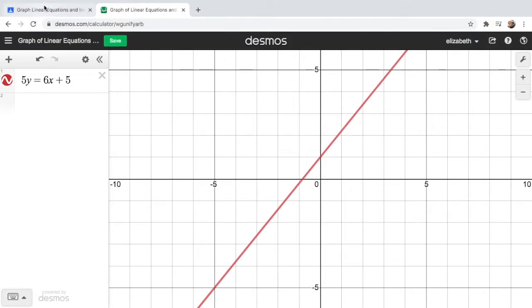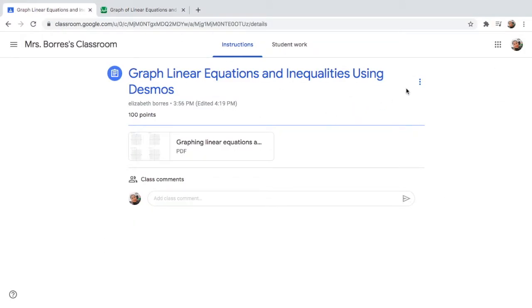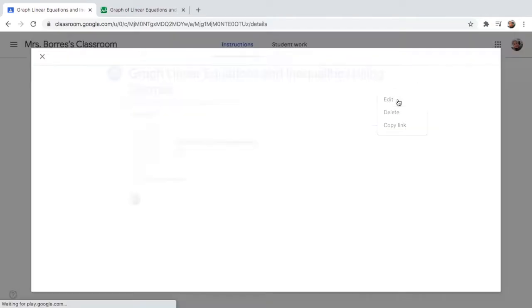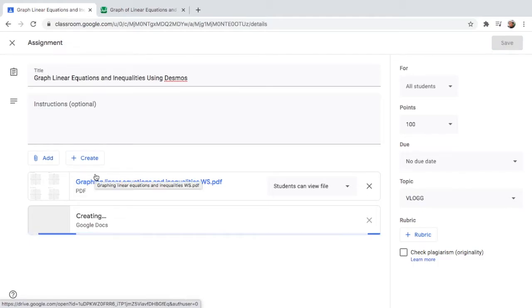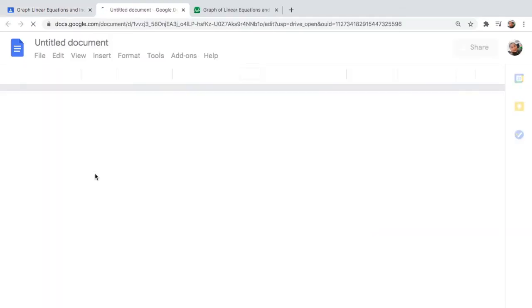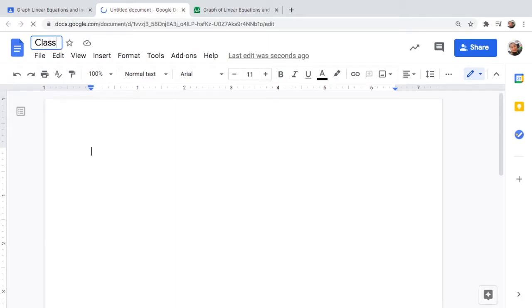So first go to your homework and then create a document. If you have a document with you, you can name it as classwork or whatever name you want to put. Then I want the name of my student to be on the document. And then let us graph the first problem now.